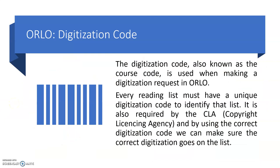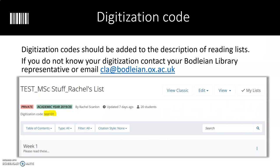The digitization code is used in Orlo for requesting digitizations, also known as scans. It is required that every list has a unique digitization code, both so that we can create scans correctly and so that we can report them to the CLA, who operate our license for scanning. Digitization codes are added to the description of a reading list, available near the top of a reading list. If your list doesn't have a digitization code, contact your Bodleian library or email cla@bodleian.ox.ac.uk.